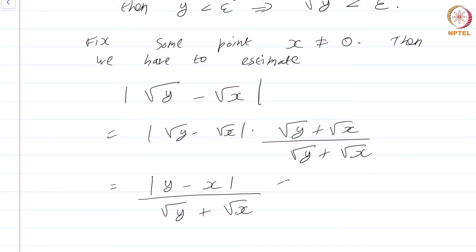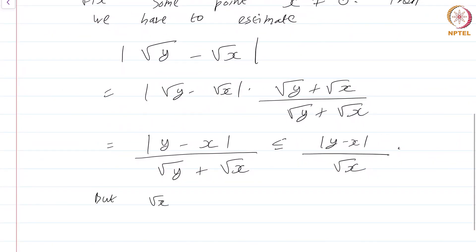Now, this is certainly going to be less than mod y minus x by square root of x because square root of y is a non-negative quantity. So I am just getting rid of something that will make the denominator larger. But root x is a fixed quantity. So by the k epsilon principle we are done.